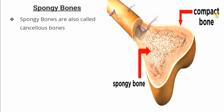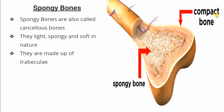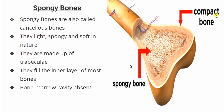The spongy bone is also called the cancellous bone. It is light, soft, and sponge-like in nature. It has a trabecular structure, and its microscopic structure shows a comb-like structure with tube-like parts that are interlinked. The spongy bone fills the inner layer of most bones. The outer covering is compact bone, and on the inner side we see spongy bone. The spongy bone has no bone marrow cavity and is more present in the epiphysis region.